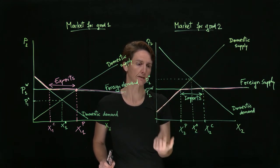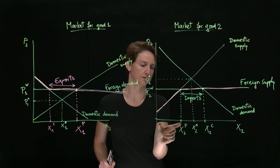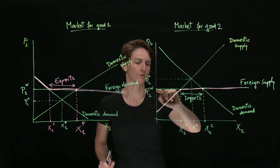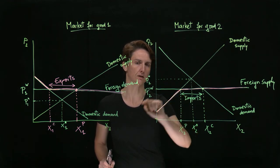Domestic producers, on the other hand, obtain a smaller price for their goods and are selling fewer units. So producer surplus with imports is this smaller triangle.